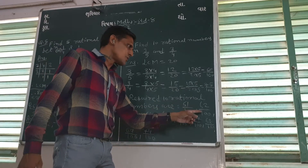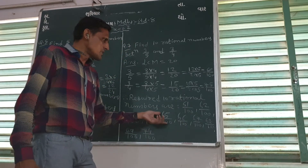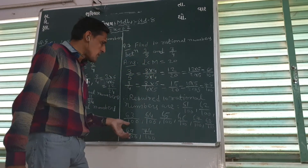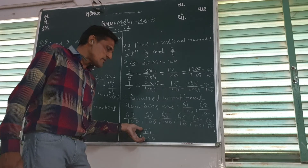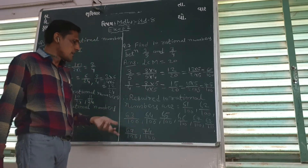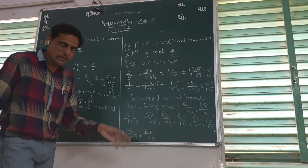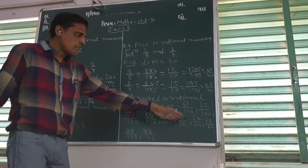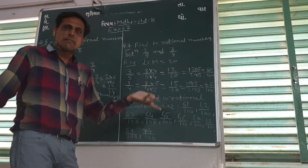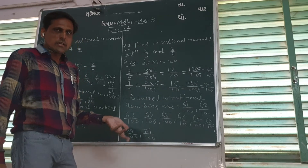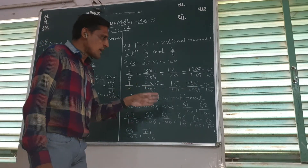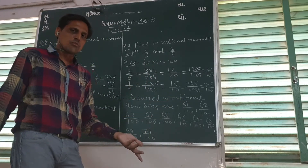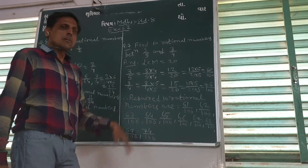So required 10 rational numbers are: 61/100, 62/100, 63/100, 64/100, 65/100, 66/100, 67/100, 68/100, 69/100, and 74/100. We can also write 70/100, 71/100, or 72/100 instead — any 10 numbers between 60/100 and 75/100 are valid.